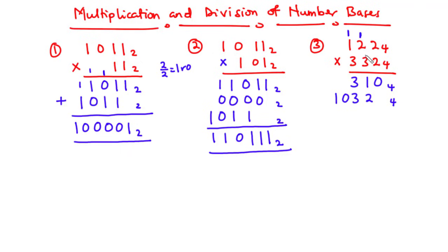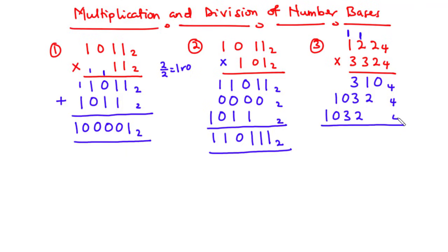Now, to the third value: 3 times 2 is 6, so that becomes 1 remainder 2. We have 2 and carry on 1. 3 times 2 is 6, plus 1 is 7. So that becomes 1 remainder 3. We have 3 and carry on 1. 3 times 1 is 3, plus 1 is 4. So that becomes 0 remainder 1. So let's add the three values.